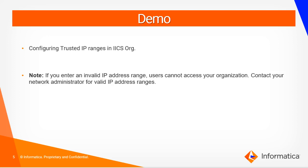Let me show you a quick demo on how you can configure trusted IP ranges in IACS orgs. One thing to note here is that if you enter an invalid IP address range, then users would not be able to access your organization. So it is advised to contact your network administrator for getting the valid IP address ranges.